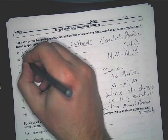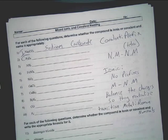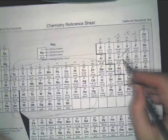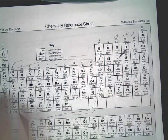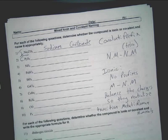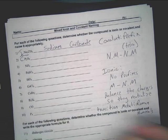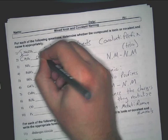Now, the next one is a covalent compound. I know that because we have phosphorus and we have oxygen. Phosphorus and oxygen are both nonmetals. And, that means you're going to use prefixes. So, this is pretty easy, too. Just write, you know,